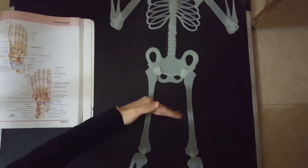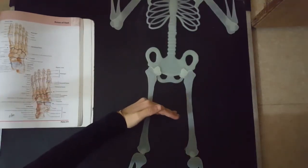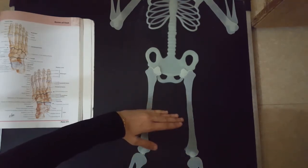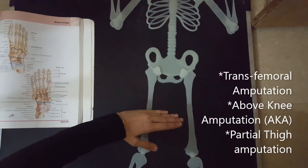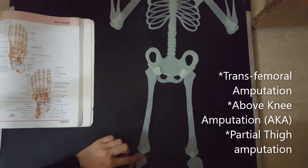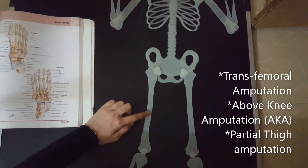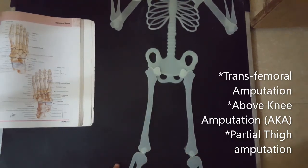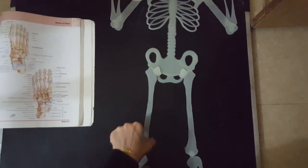Then we can do amputation through the femur bone. If we do amputation through the femur bone, it is called transfemoral amputation. It is also called above the knee amputation, and it can also be called partial thigh amputation because we have partially removed the thigh.